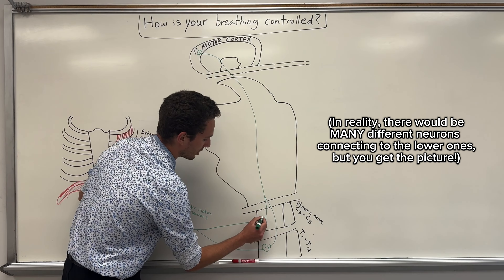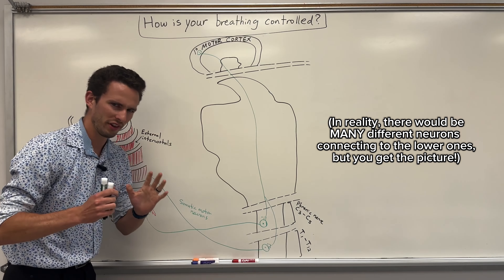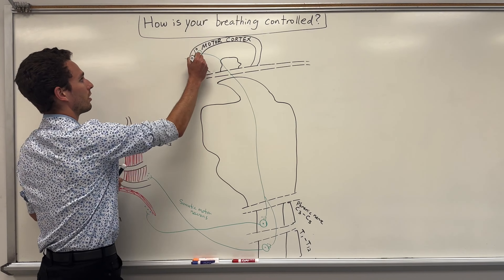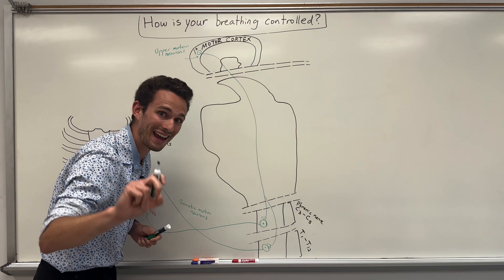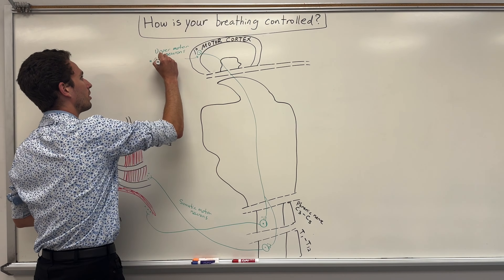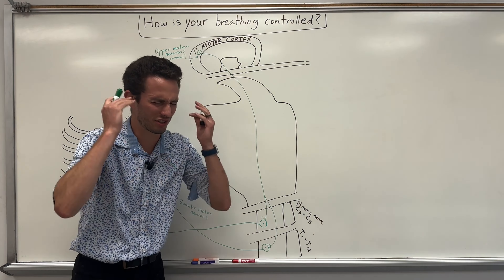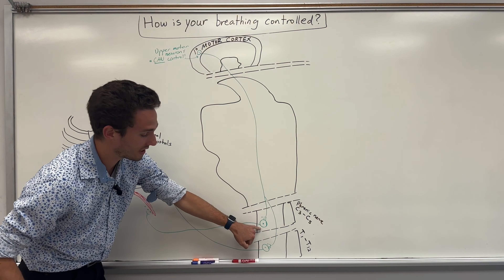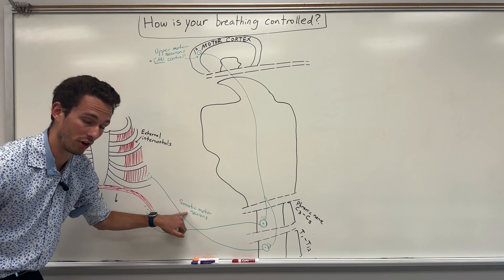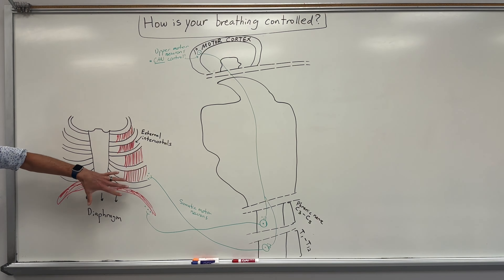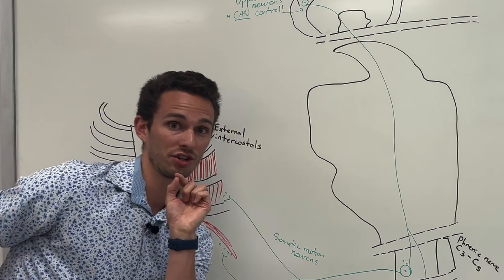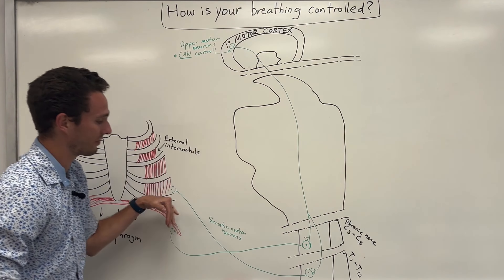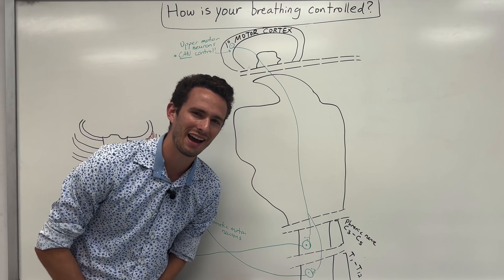These upper motor neurons will tell the lower neurons to be stimulated. So really, this is a two-neuron system. Through the process of consciousness, you can trigger them to send action potentials down to here, stimulate the lower motor neurons or somatic motor neurons, thus talking to these muscles and telling them to contract. When you're done breathing in, you stop thinking about it, cut off that signal, and therefore these muscles will recoil back and you will breathe out.